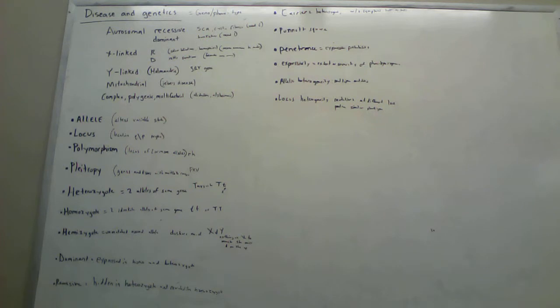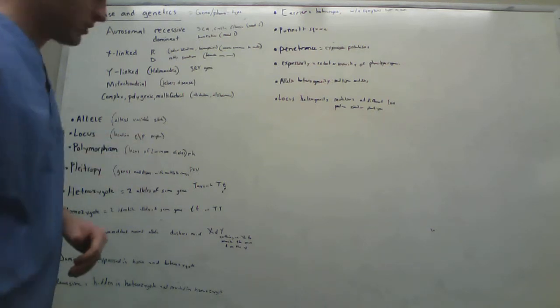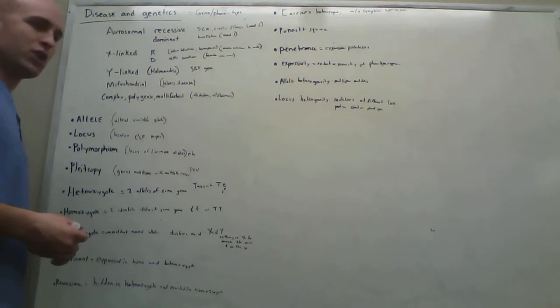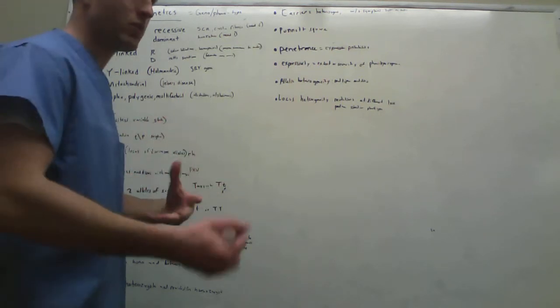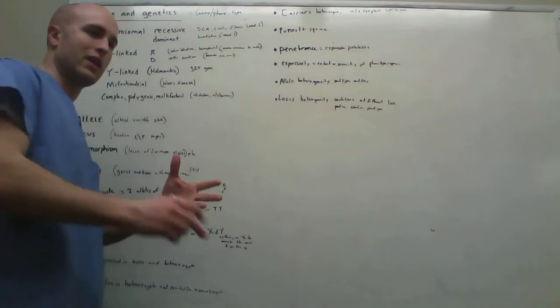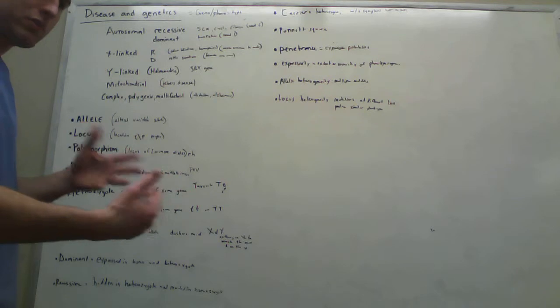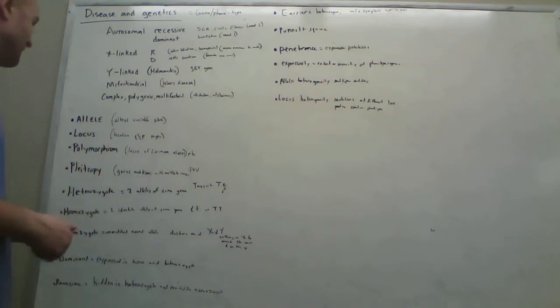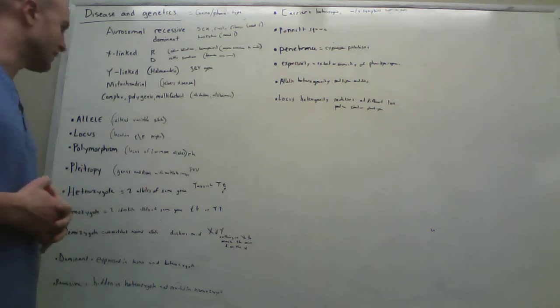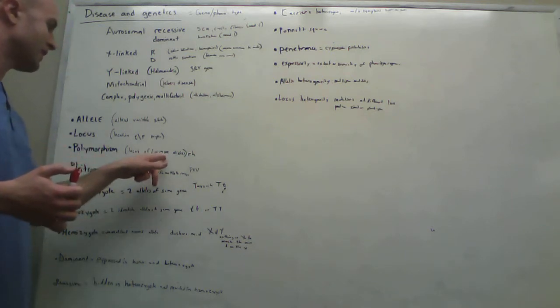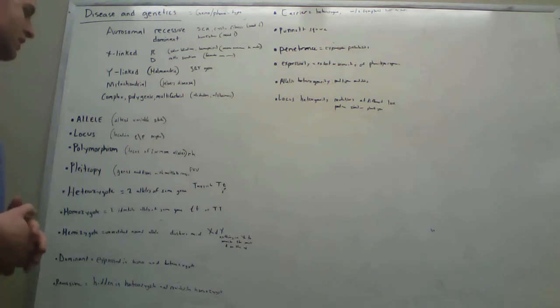So what is an allele? An allele is an altered variable state. What is a locus? It is the location, such as like on the QP region. So if we're talking about this is the locus, basically where is it located? It's this far up on the Q arm or this far down on the P arm. Remember, Q is long, P is short for patine. Polymorphism, this is where it has a locus of two or more alleles or altered variable state in two or more different locations.